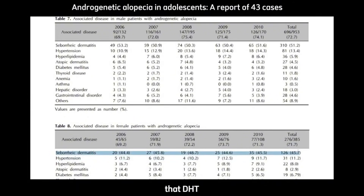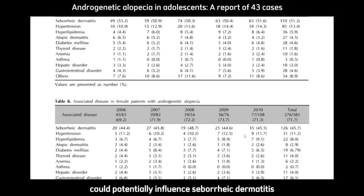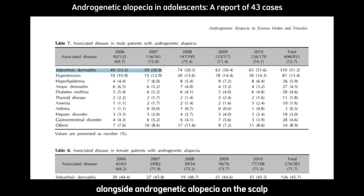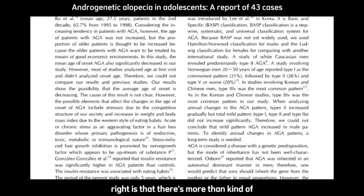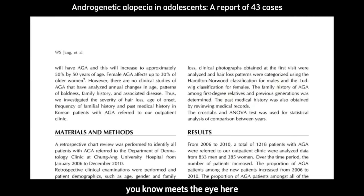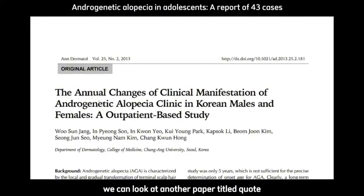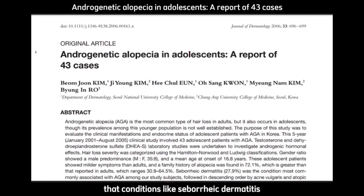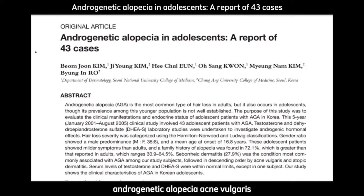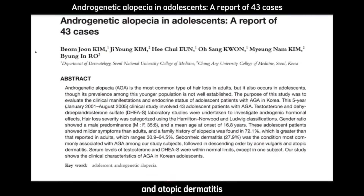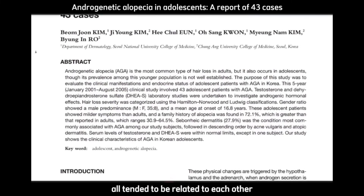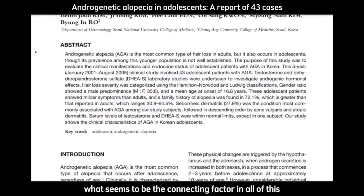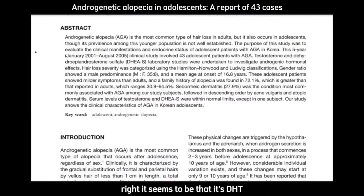There's a really good argument to make that DHT could potentially influence seborrheic dermatitis alongside androgenetic alopecia on the scalp. Looking at another paper titled "Androgenetic Alopecia in Adolescence: A Report of 43 Cases," published in 2006 by Byung-Joon Kim et al., conditions like seborrheic dermatitis, androgenetic alopecia, acne vulgaris, and atopic dermatitis all tended to be related to each other. The connecting factor in all of this seems to be DHT.